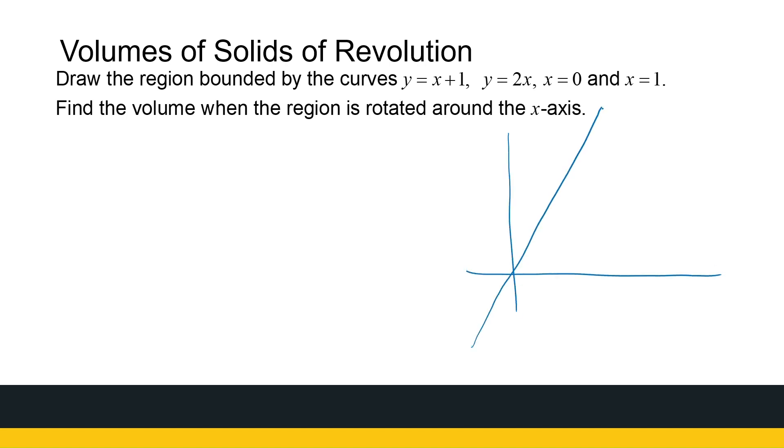So when I sketch it, y equal to 2x goes over there. y equal to x plus 1 cuts the y-axis at 1, the x-axis at minus 1. So it'll go this way. So they've got 1, minus 1, 0. So let's hope they cross where we want them to cross. If x is equal to 1, they're both equal to 2. So yes, this is where they cross. So this is the area we're looking at.